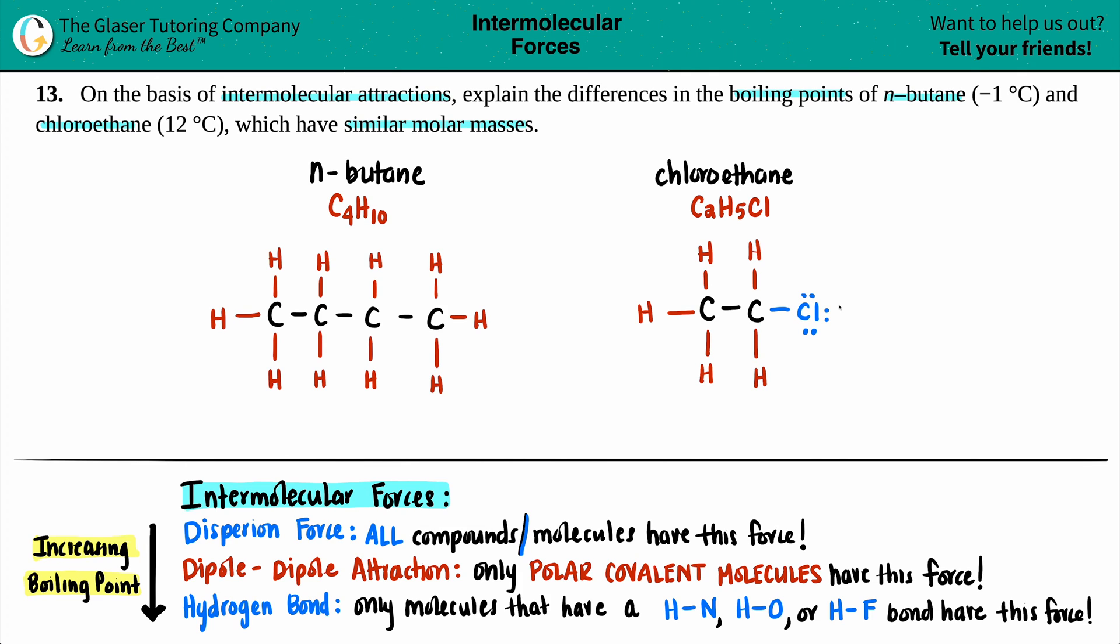So now here are the drawings between the butane and the chloroethane. They have similar molar masses, but yet the n-butane boiling point is much lower. It's only negative one degrees Celsius versus the boiling point of the chloroethane, which is 12 degrees Celsius. Now, if they're talking about boiling points, the reason behind different boiling points is all due to intermolecular forces.